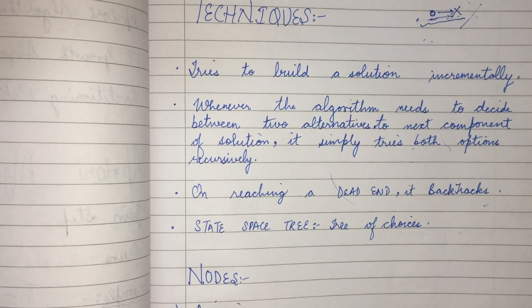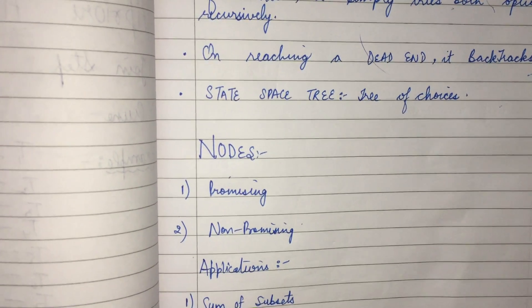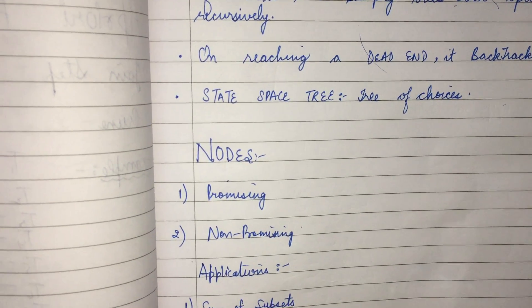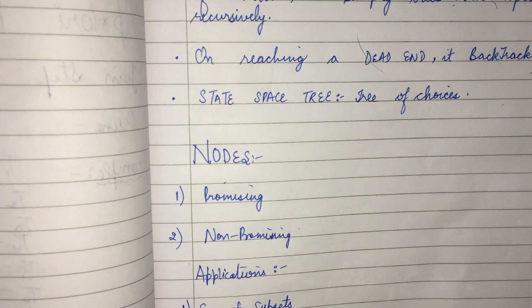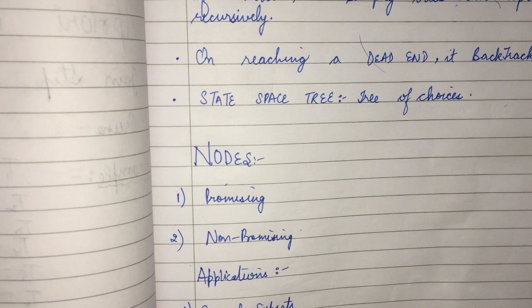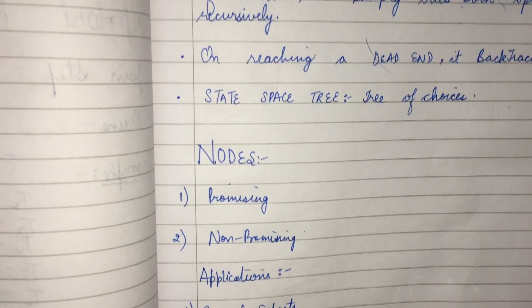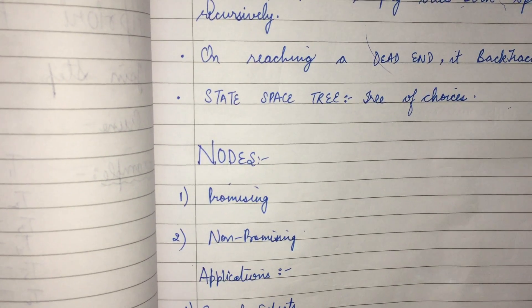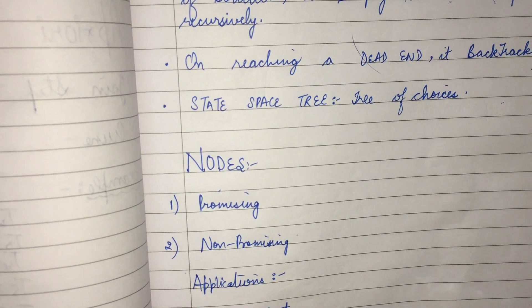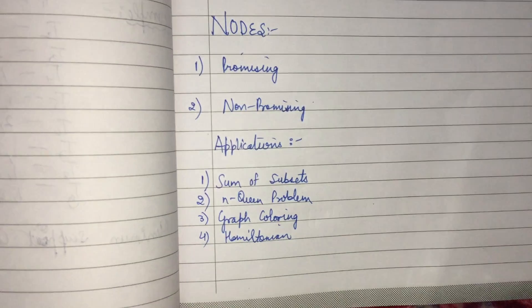There are two types of nodes: promising nodes and non-promising nodes. A promising node gives surety that going further from here will yield a solution. A non-promising node is the dead end — going further will not give a solution. When we reach a promising node we move to its children; when we reach a non-promising node we backtrack until we find a promising node, then move further to its children.